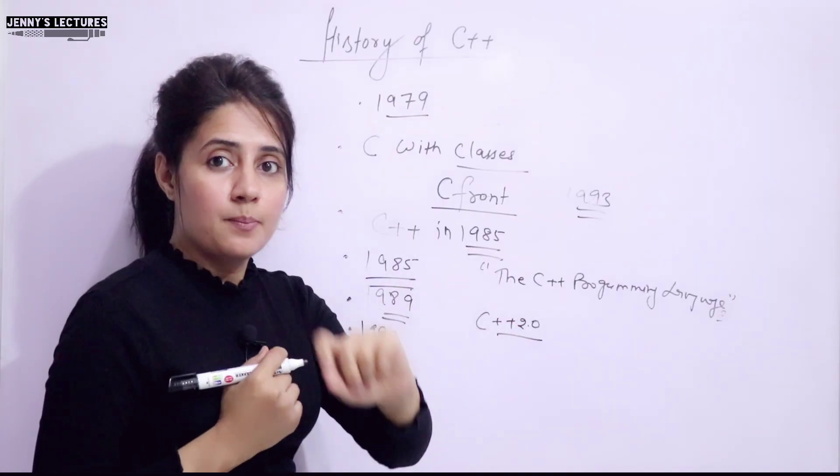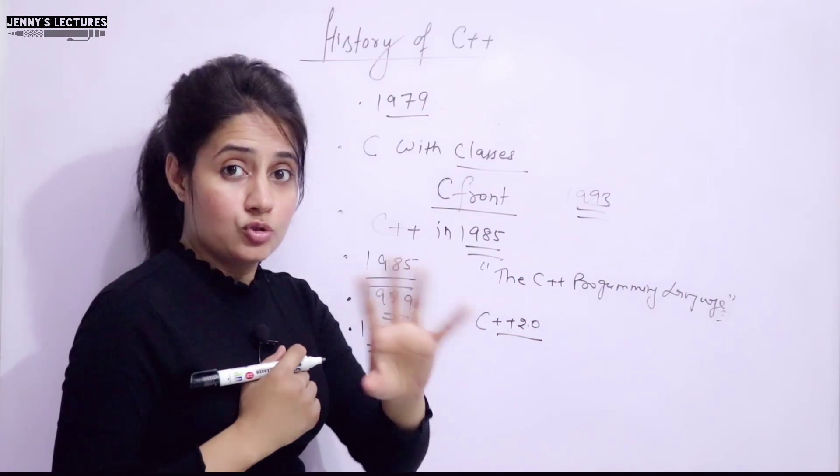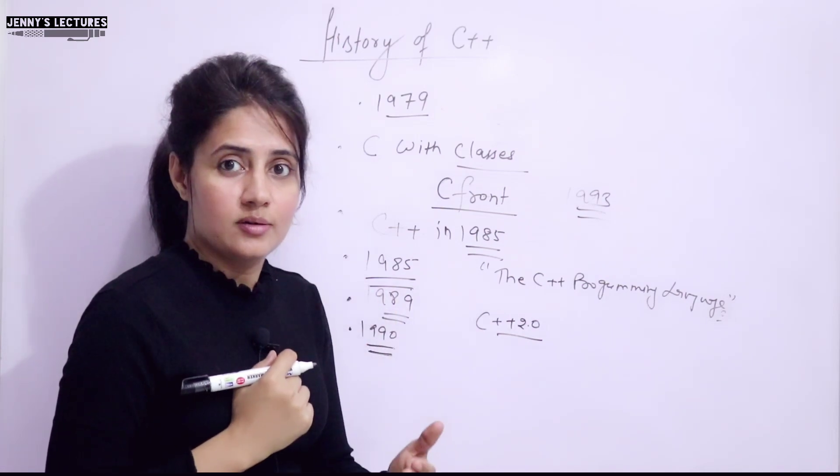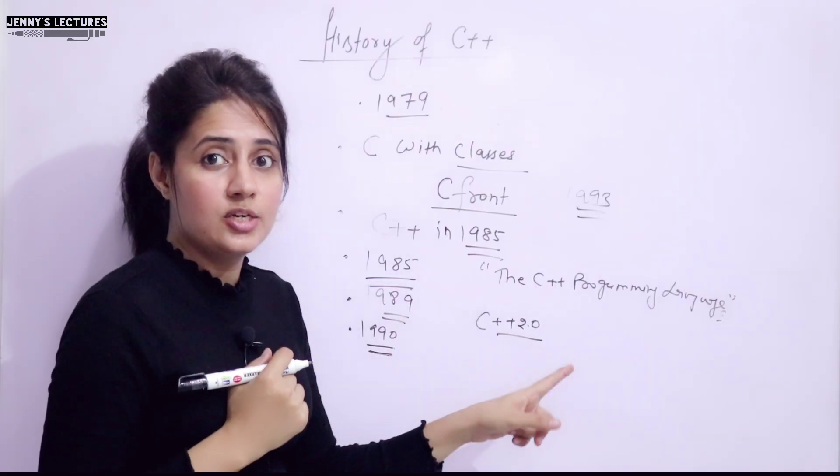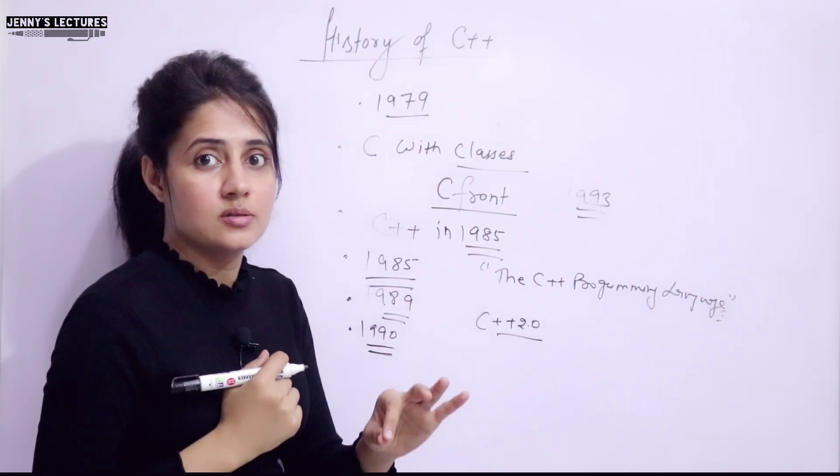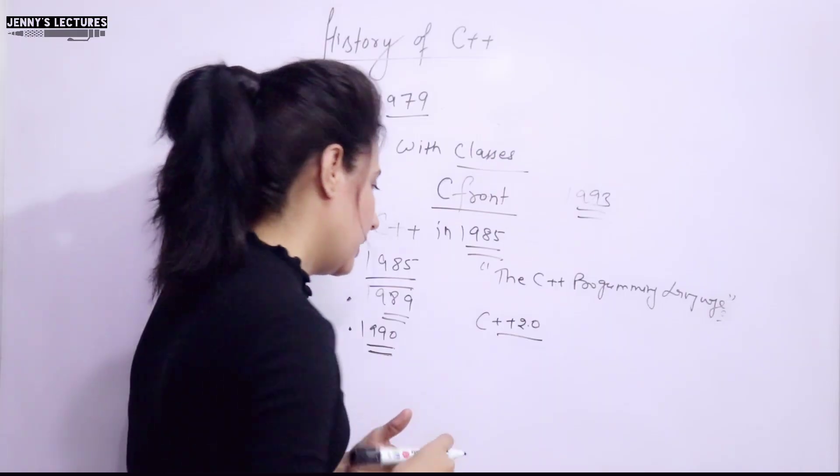And in the same year, Borland Turbo C++ compiler was also released as a commercial product. And the last stable release for this compiler was in 2006. But still we use this compiler.